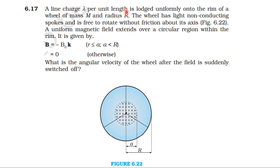A line charge lambda per unit length is lodged uniformly onto the rim of a wheel of mass capital M and radius capital R. The wheel has light non-conducting spokes and is free to rotate without friction about its axis. A uniform magnetic field extends over a circular region within the rim, given by B equals minus B₀ k-hat, where r is less than or equal to a (where a is less than R), and B is zero otherwise. What is the angular velocity of the wheel after the field is suddenly switched off?